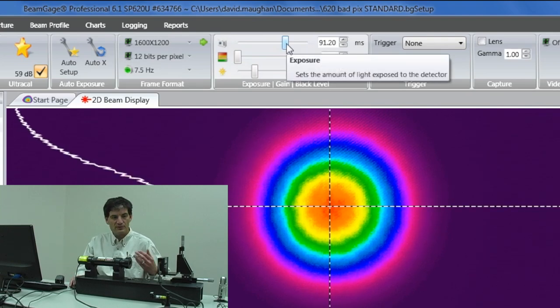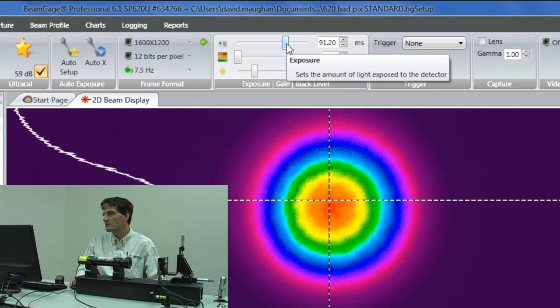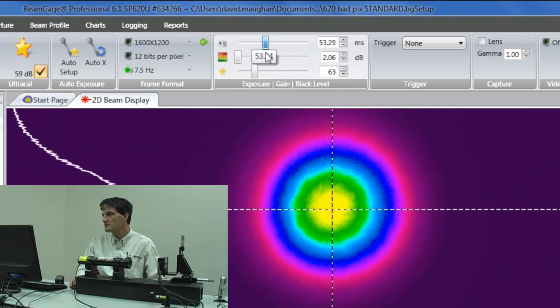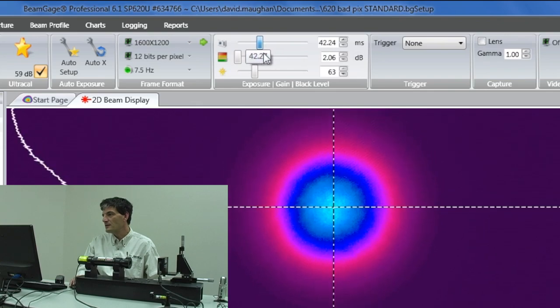So a final thing is once you've adjusted your beam attenuation, you can actually change basically the sensitivity of the camera electronically to dial in the amount of light that you want.